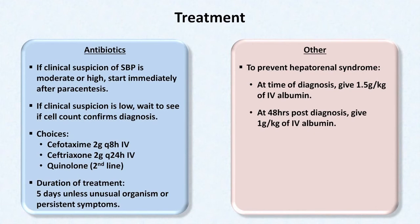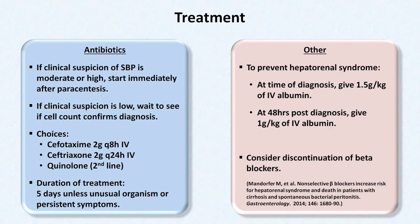Finally, a relatively new finding published in the literature is that continuation of non-selective beta blockers, such as propranolol, after a first episode of SBP was associated with a worsened long-term mortality rate and increased days of hospitalization. This was a retrospective study that should not necessarily be paradigm shifting on its own, but one might still consider discontinuation of beta blockers in this situation. This is just one facet of the fascinating discussion of the complex role of beta blockers in cirrhosis, and the citation for this paper is listed below.